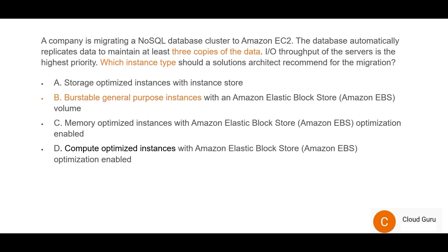As a thumb rule, always remember: when you talk about memory-optimized instances, it is something to do with analytics applications that store data in memory for great performance. Take the example of Tableau — it makes use of a lot of memory-optimized services. NoSQL databases like Cassandra on a memory-optimized instance will improve performance. However, in this question there is no mention of an analytics application or any such problem statement, hence C is wrong.